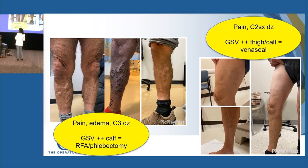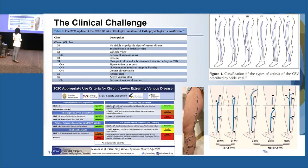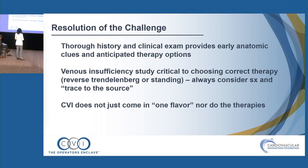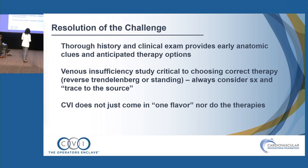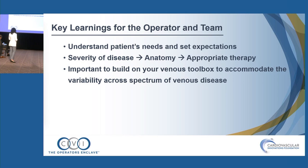Many of these decisions are made in conjunction with the patient so they understand expectations and get the result they desire. Use therapies appropriately — they are indicated for specific anatomic segments, and anatomy is highly variable. Always re-scan on the day of the procedure. Thorough history and clinical exam provide early anatomic clues. The venous insufficiency study is critical to choosing correct therapy. Chronic venous insufficiency does not come in one flavor, nor do the therapies. Understand the patient's needs, trace the severity of disease back to the anatomy, and build your venous toolbox to accommodate the variability.